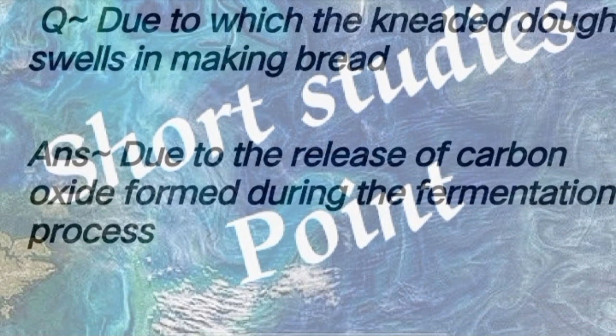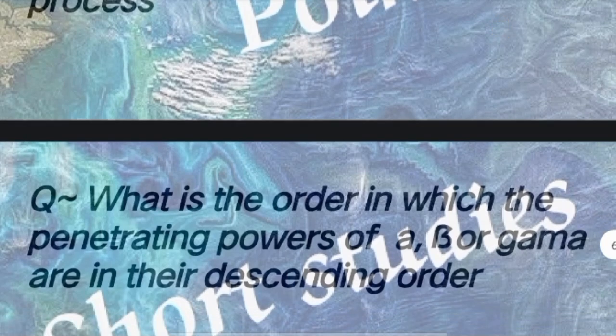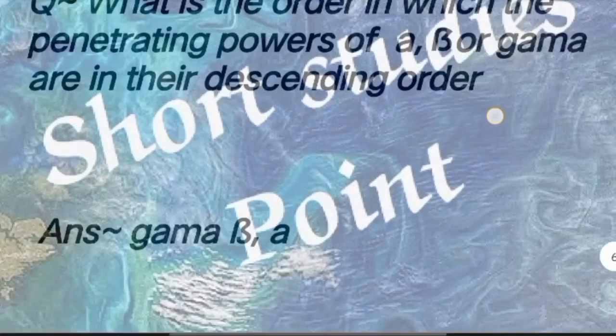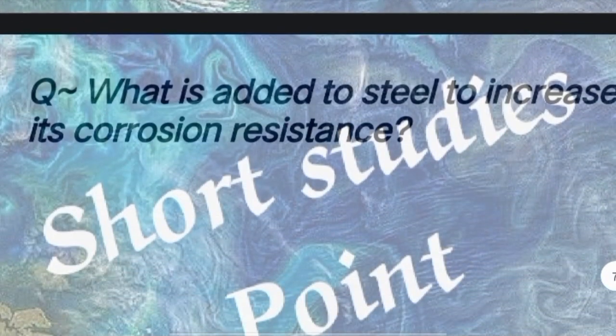Carbon dioxide is formed during the fermentation process. Next question: What is the order of penetrating power of alpha, beta, and gamma radiation in descending order? Answer: Gamma, beta, and alpha.